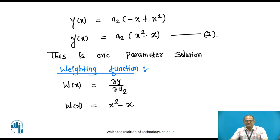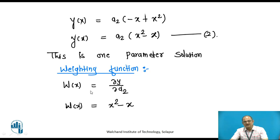In the second step, we define the weighting function. The weight function w(x) is the partial derivative of y with respect to a2. Differentiating equation 2 partially with respect to a2 gives w(x) = x² − x. The weighting function is obtained by differentiating the trial solution with respect to the unknown parameter.